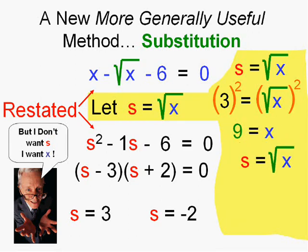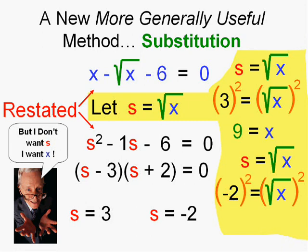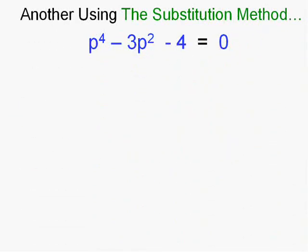The other s I got was a negative 2. So let's put that in for s and solve for x by in this case squaring both sides and son of a gun we have two answers that will work: x as 9 and 4. Now let me do another one and see what we do that's the same as we did the first time.